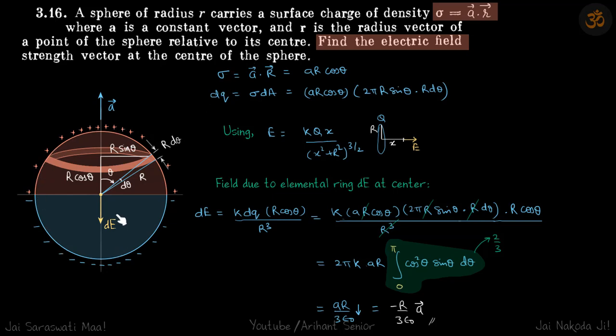We are given a sphere where the surface charge density varies as σ = a⃗·r⃗, where a⃗ is a constant vector. Let's say it is in this direction, some vector dot r⃗ vector, where r⃗ is the position of the point on the surface. We need to find the electric field at the center of the sphere.